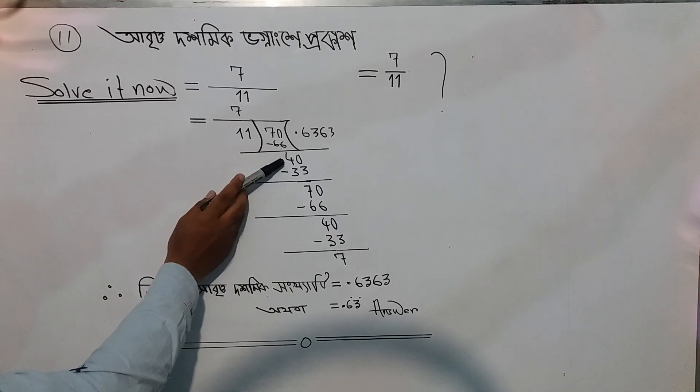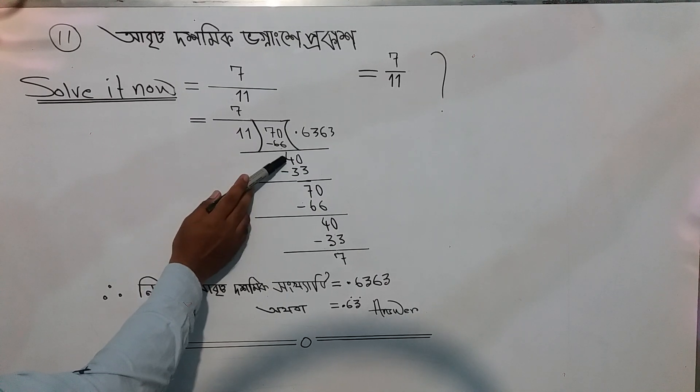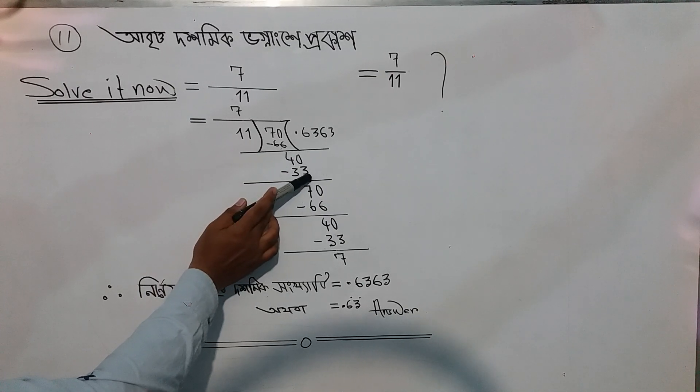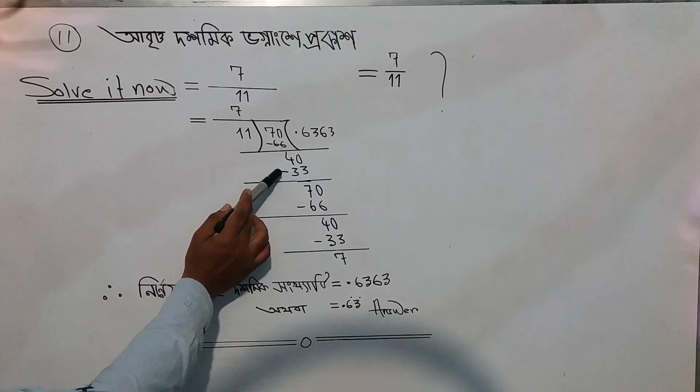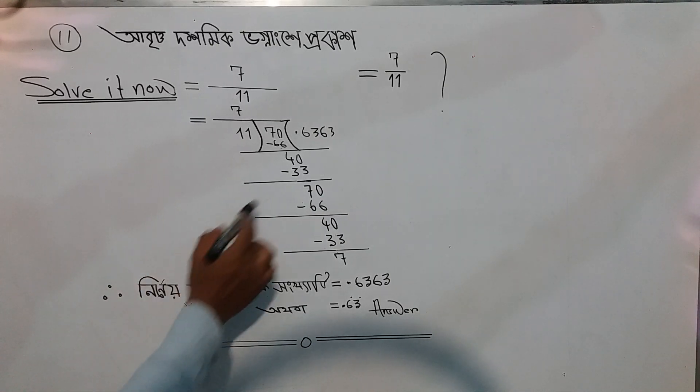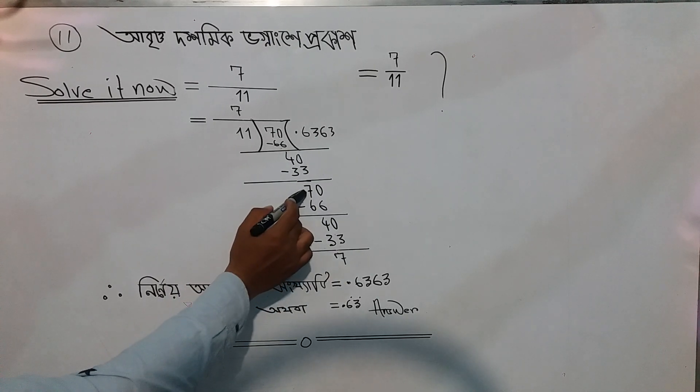Now forty divided by eleven. Three times eleven is thirty-three. We subtract thirty-three from forty and we get seven.